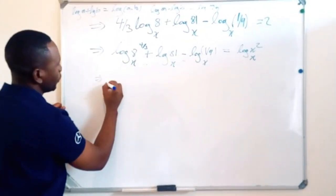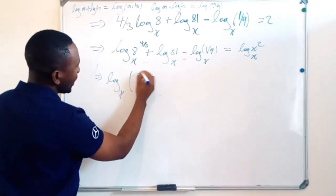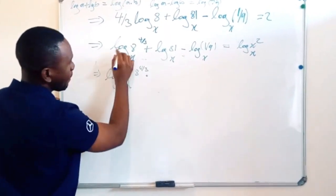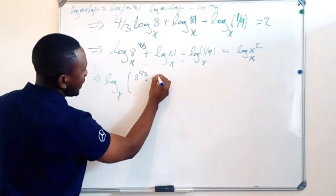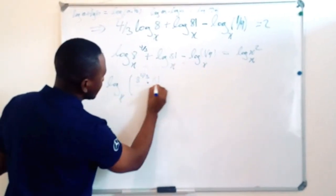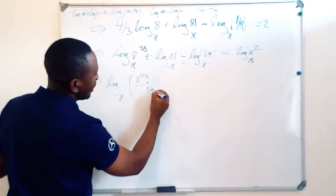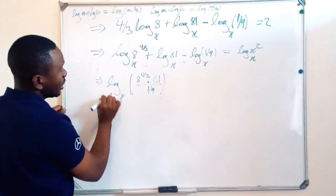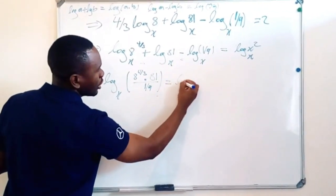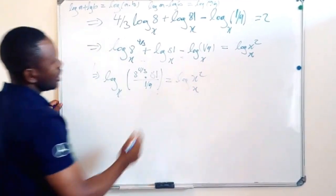So this will be equal to log, I open my bracket, of 8 exponent 4/3 multiplied by 81, and then divided by 1 over 9. And all of those log in base x. And this is equal to log of x squared in base x.